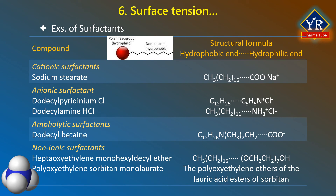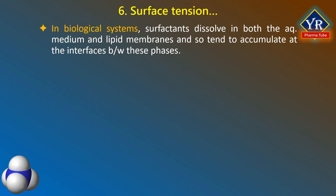Surfactants are classified as cationic, anionic, ampholytic, and non-ionic surfactants, depending on the nature of their hydrophilic groups. Cationic surfactants have a positively charged hydrophilic group, while anionic surfactants have a negatively charged hydrophilic group. Ampholytic surfactants have electrically neutral structures that contain both positive and negative charges — they are zwitterions. Non-ionic surfactants do not form ions in solution. The terms amphiphile and surfactant are frequently used interchangeably. In biological systems, surfactants dissolve in both aqueous medium and lipid membranes and tend to accumulate at the interfaces between these phases.